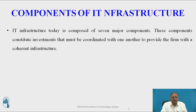First, we are going to see the components of IT infrastructure. IT infrastructure today is composed of seven major components. These components constitute investments that must be coordinated with one another to provide the firm with a coherent infrastructure. In the past, technology vendors supplying these components were often in competition, offering purchasing firms a mixture of incompatible proprietary partial solutions. But increasingly, vendor firms have been forced by large customers to cooperate through strategic partnerships.